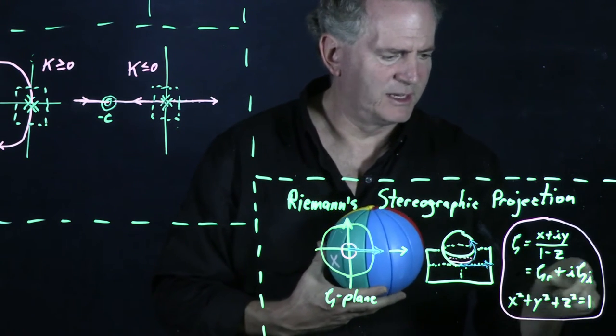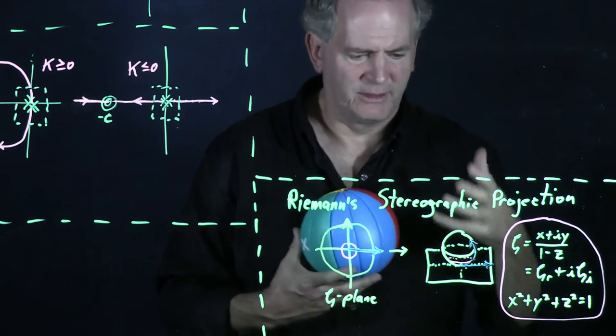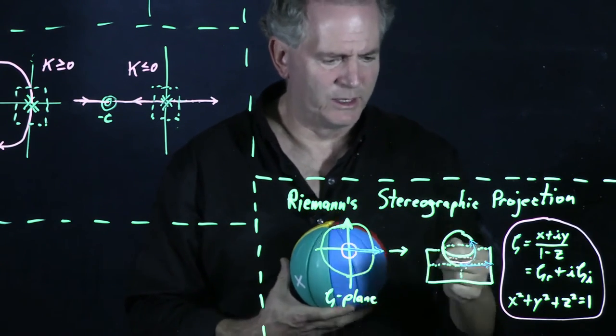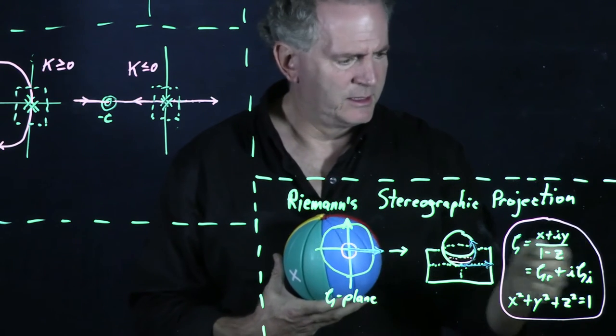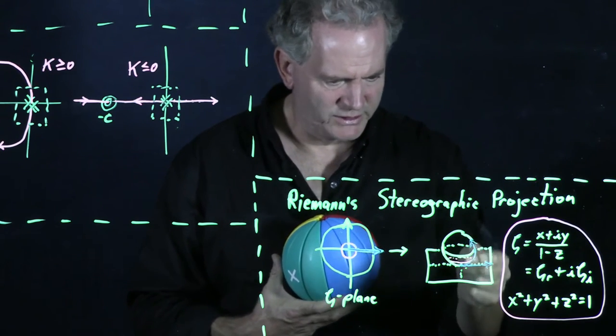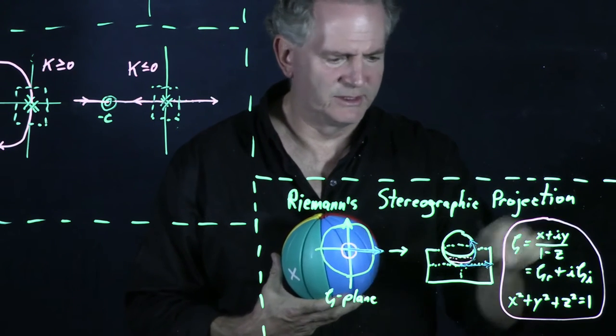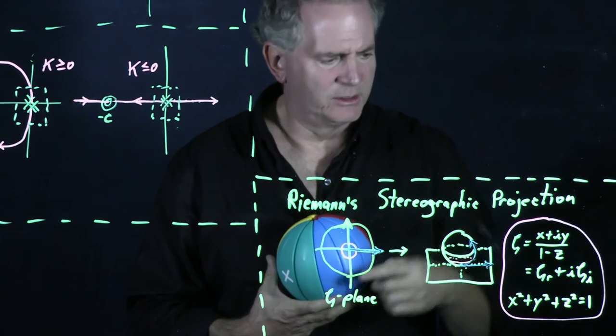And other values of zeta r and zeta i, if the sum of their squares is less than one, requires a z which is negative. And so that gives us a point down in the southern hemisphere.